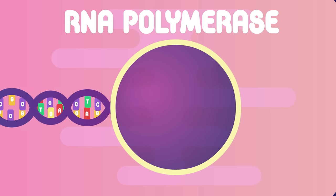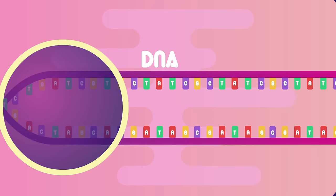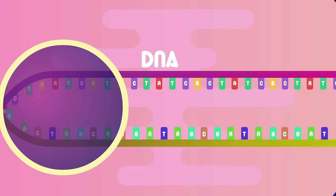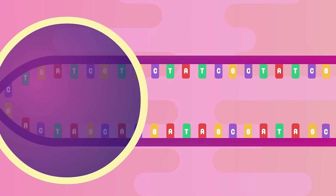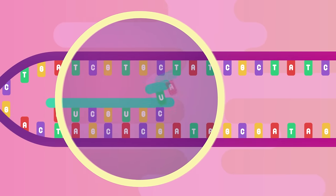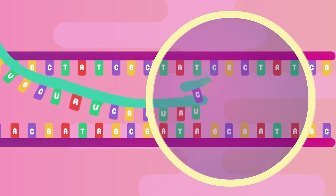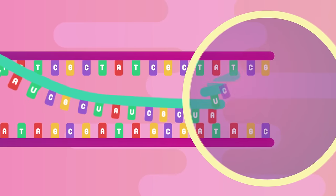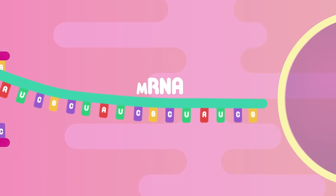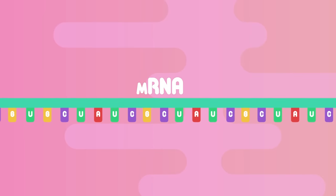In the nucleus, the enzyme RNA polymerase unwinds and unzips the two strands of DNA that contain the protein-making gene. Only one of these strands is going to be replicated. Complementary RNA nucleotides base pair with the chosen strand. RNA polymerase then binds the RNA nucleotides together, making a new RNA strand. This is called messenger RNA or mRNA, and this whole process inside the nucleus is called transcription.